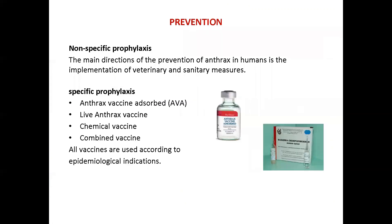Prevention methods: non-specific prophylaxis involves the implementation of veterinary and sanitary measures as the main direction of anthrax prevention in humans. For specific prophylaxis, vaccines used include adsorbed anthrax vaccine, live anthrax vaccine, chemical vaccine, and combined vaccine — all used according to epidemiological indications. That concludes this topic. Thank you for your attention.